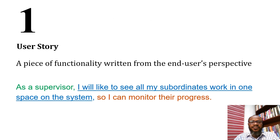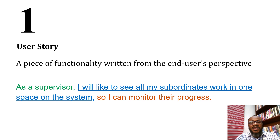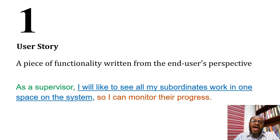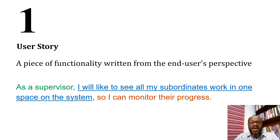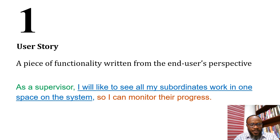We begin with user stories. In agile, features or functionalities are written as user stories. A user story is a piece of functionality written from the end user's perspective. A user story typically has three parts: the first part is the persona — the end user performing the action; the second part is the action or expected functionality; and the third part is the objective that functionality fulfills.